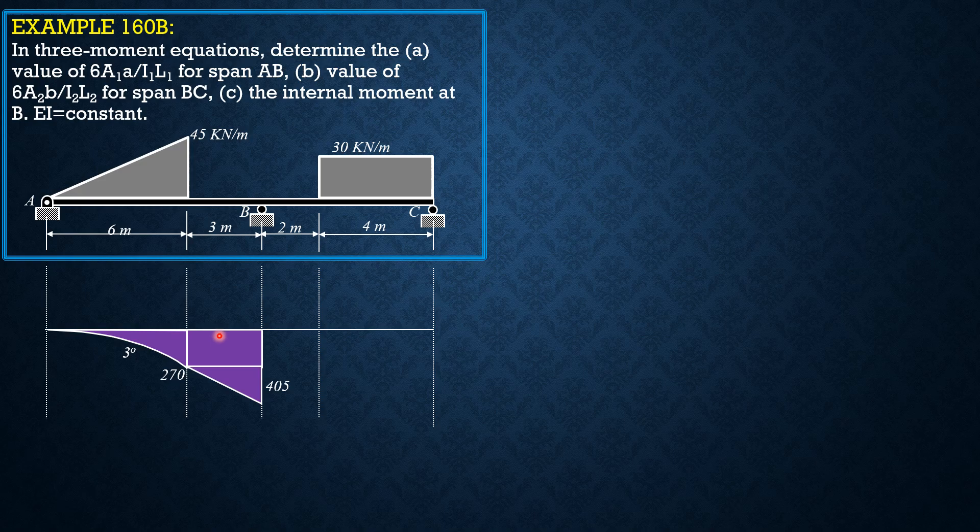So, therefore, the moment of the reaction at B is also 270 plus 405 because the positive moment and the negative moment must match because the principle is AB is considered simply supported. So, the moment at B must be 0. So, this is 270 plus 405 and that is 675. So, that's it for this moment diagram by parts of this triangle.